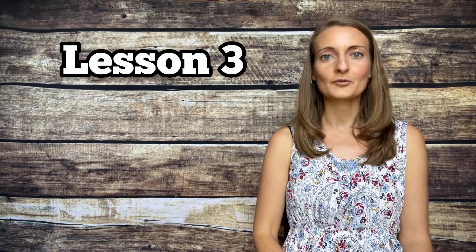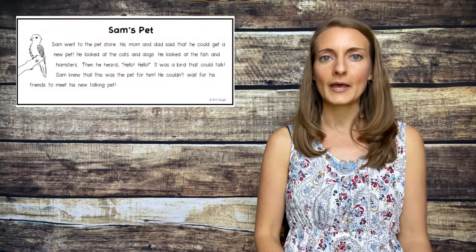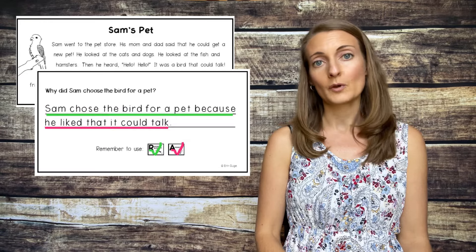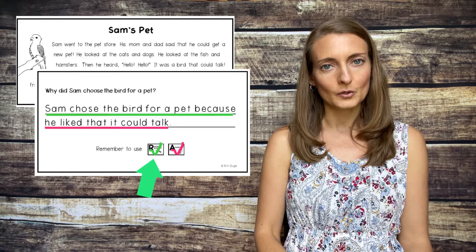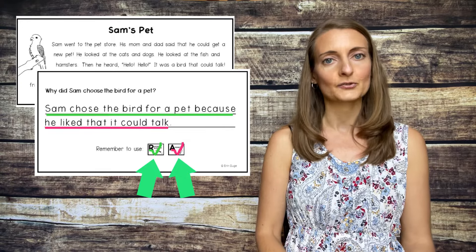Hi everyone, it's great to have you back. This video series is all about how to use a special writing strategy that will help you answer questions about something you have read. Remember last time we read the story called Sam's Pet and then we had to answer a question? We wanted to be sure we had the R part — restate the question — and the A part — answer the question correctly. This makes your answer easier to understand for whoever is reading it.